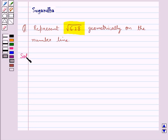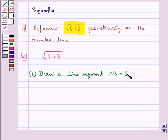Let's move on to the solution. We need to represent square root of 6.28 on the number line. For this, our first step is to draw a line segment AB equal to 6.28 units.